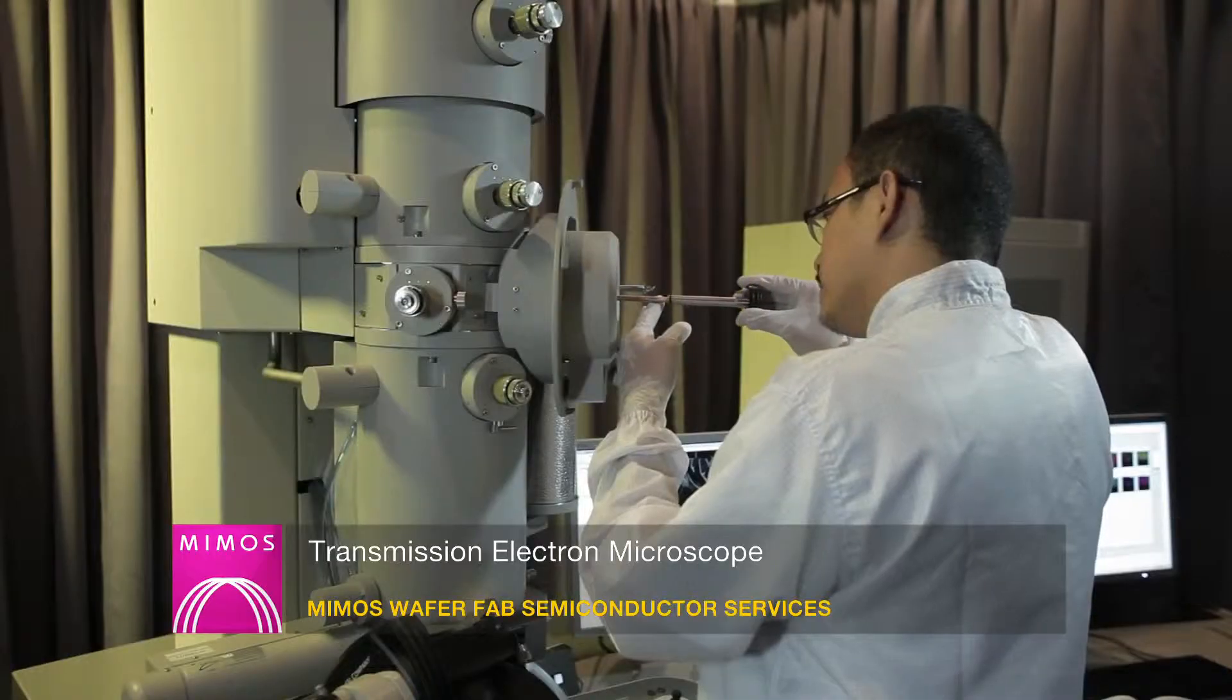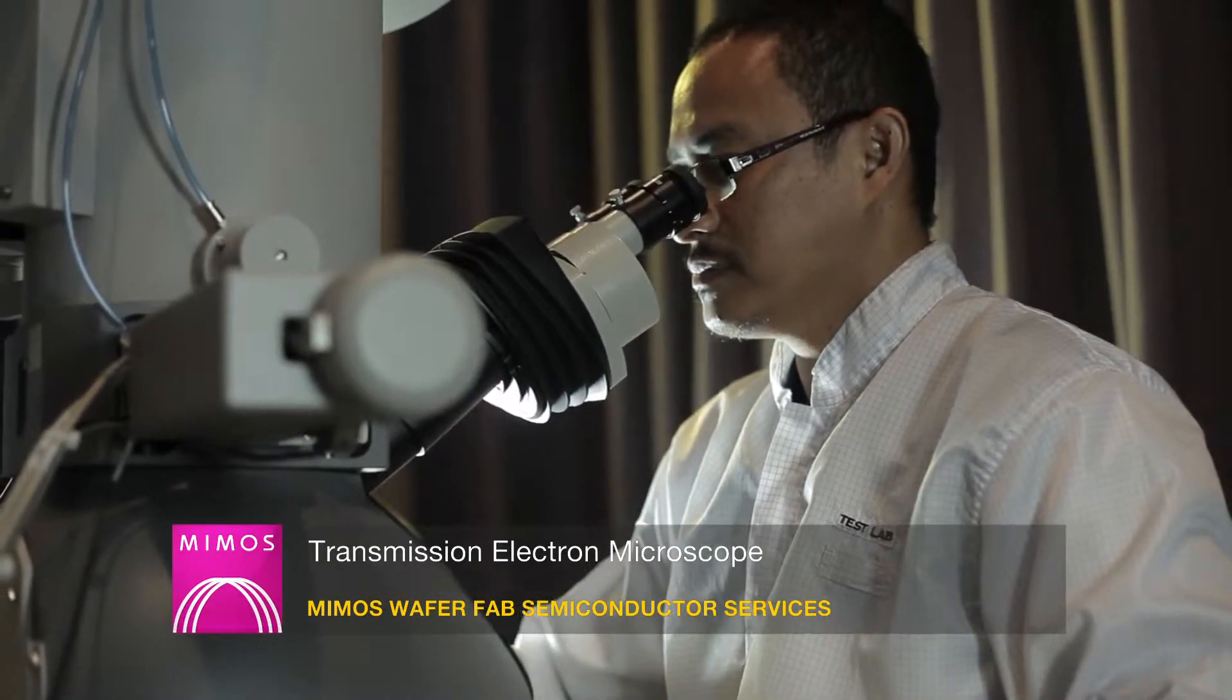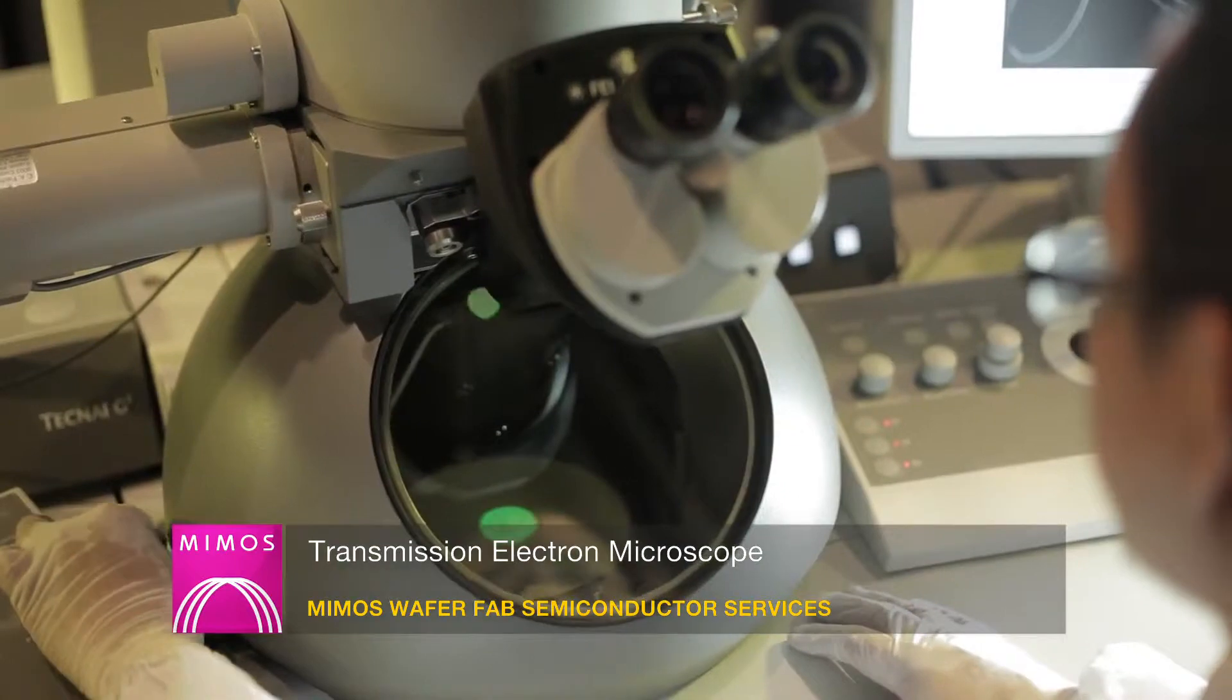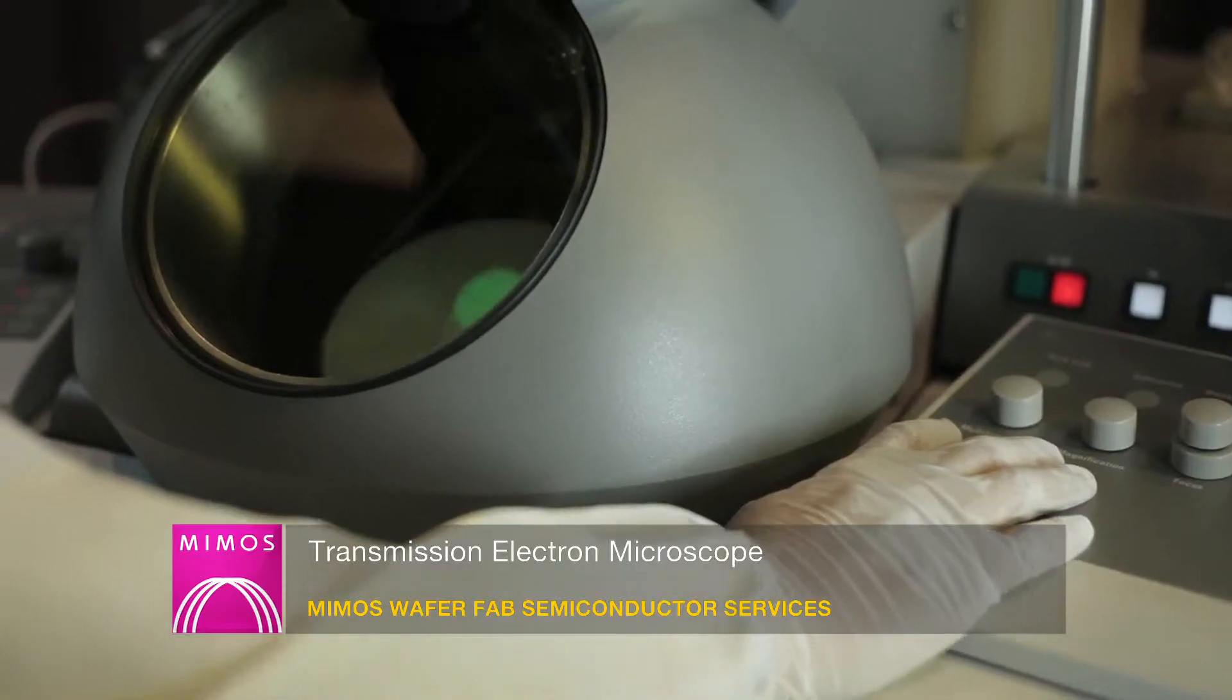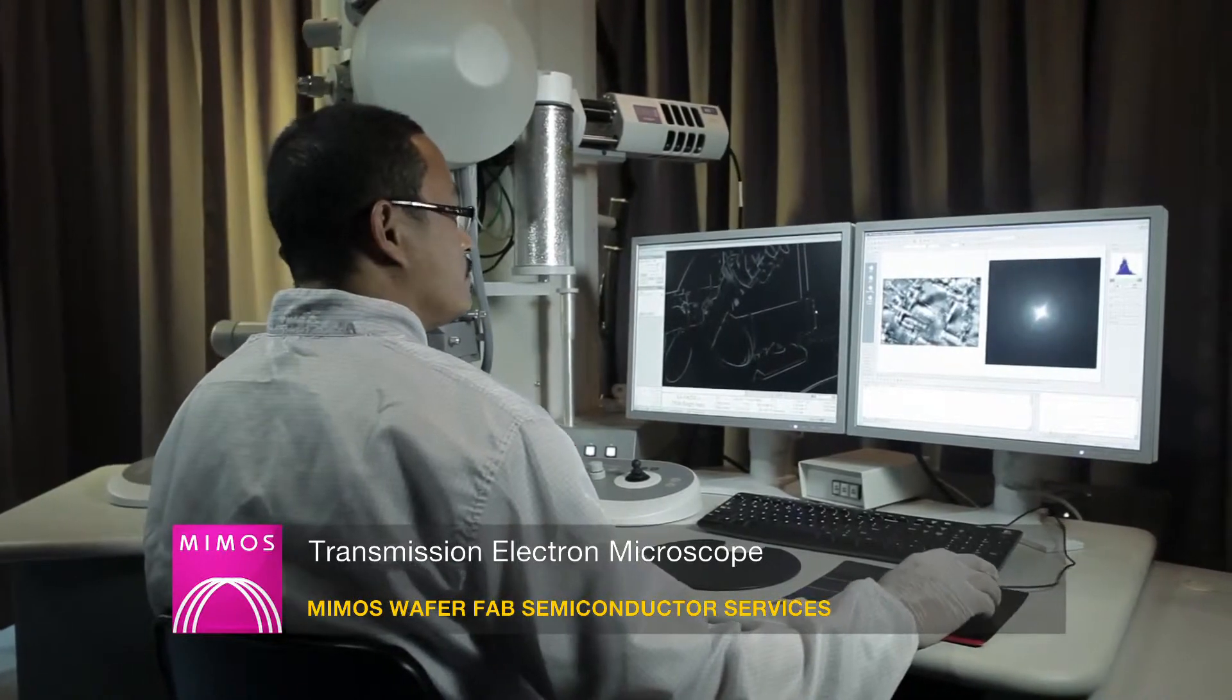Transmission electron microscope is the most powerful microscope that is able to examine fine details within the angstrom level resolution to reveal crystallographic information. The system is equipped with EDS for elemental information.